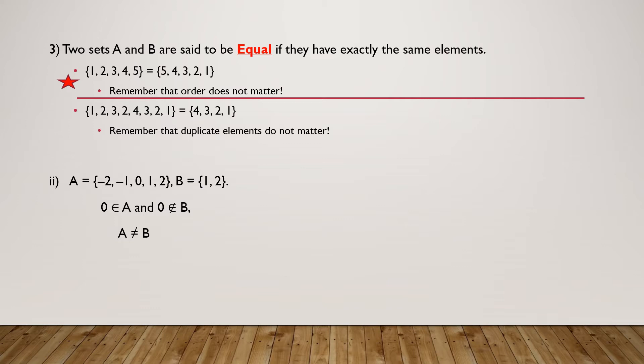Similarly, if we write {1, 2, 3, 2, 4, 3, 2, 1} or {4, 3, 2, 1}, then only elements are repeated so sets are equal. Now suppose we take another example comprising one set A having elements −2, −1, 0, 1, and 2, and one set B comprising 1 and 2. Then 0 is an element lying in A but not in B, so these two sets are not equal.